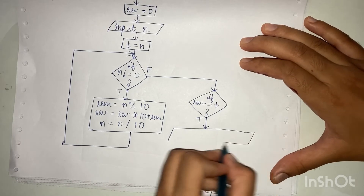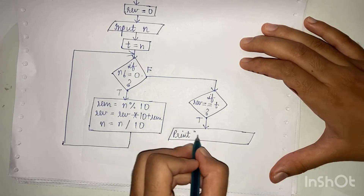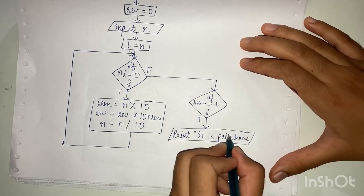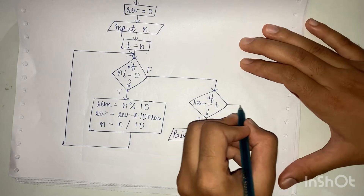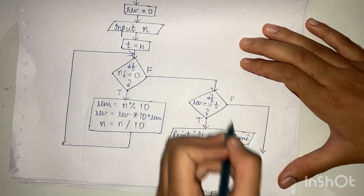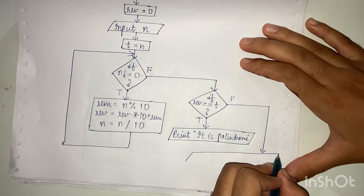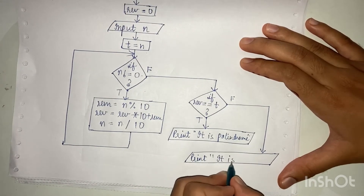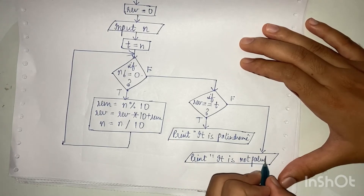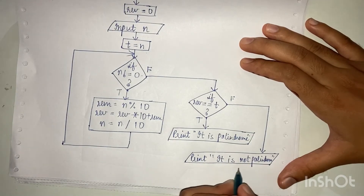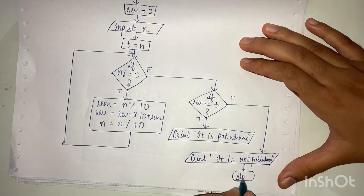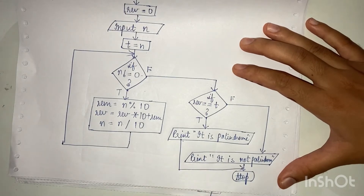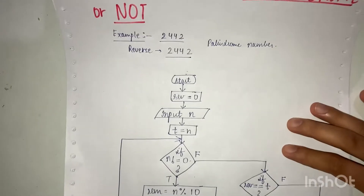If the reverse equals p, we print a message that it is a palindrome. If the condition is false, we print that it is not a palindrome. Then we stop. We connect this to stop. So this is what the flowchart shows.